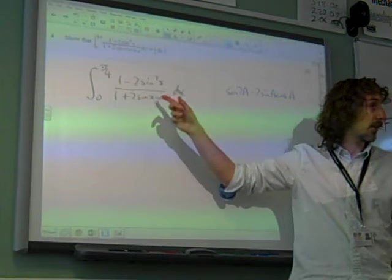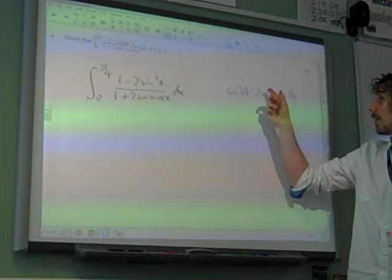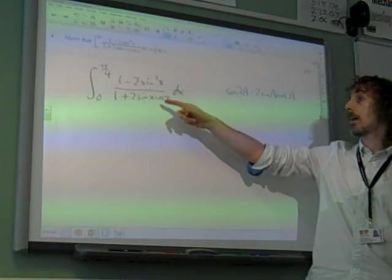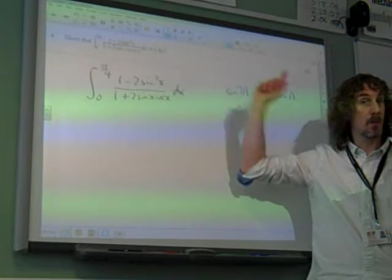And look, it's there. 2 sin x cos x. So that's 1 plus sin 2x on the bottom. That's the first thing to recognize.